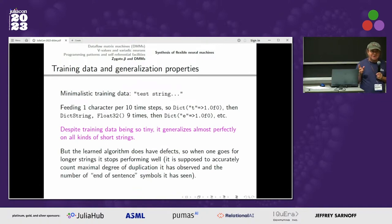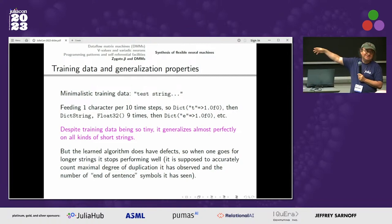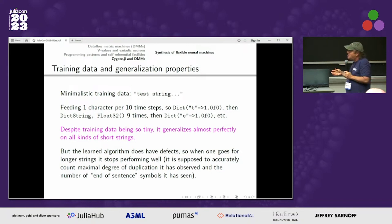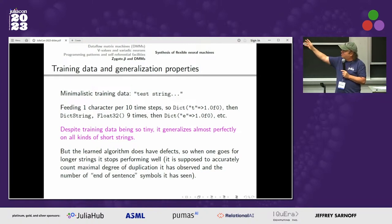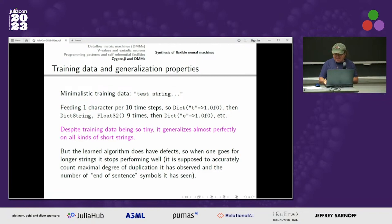Training was done on an absolutely minimalistic dataset: I took just one string test string with three dots at the end and fed one character every ten time steps — one character, then nine empty dictionaries, then another — a very small training sequence of 140 elements. Still it generalized greatly: for short strings it works perfectly, but if you go to long strings outside the training envelope you start seeing defects. But it's impressive that it works so well — I think it's a nice discovery.